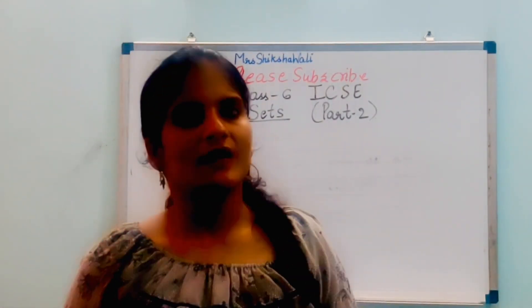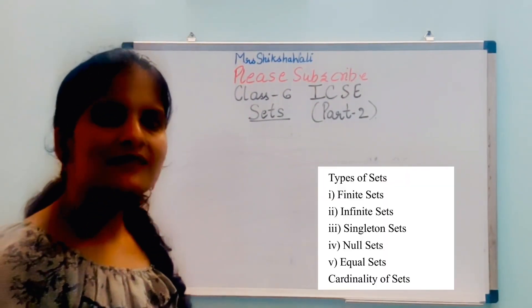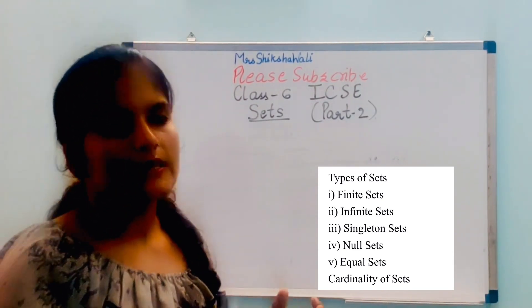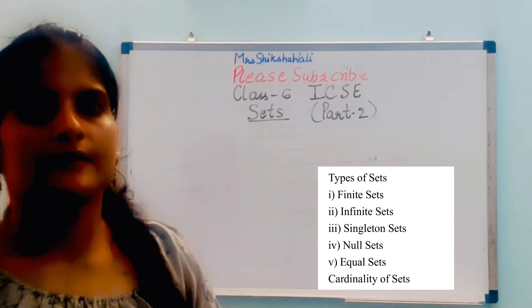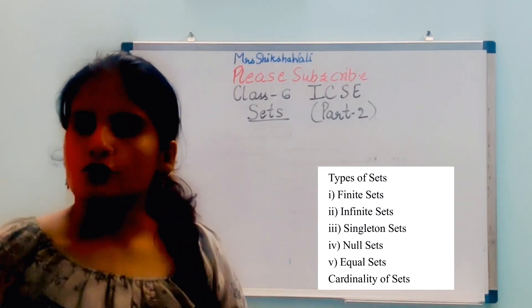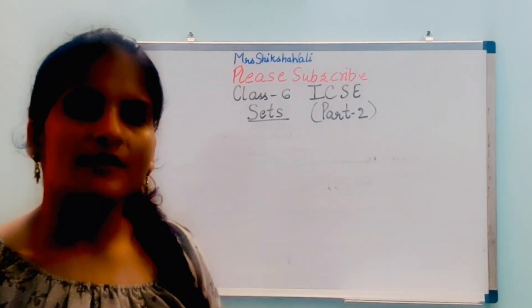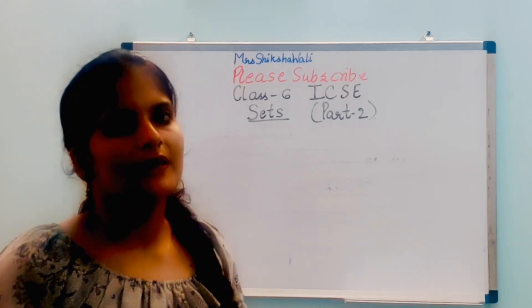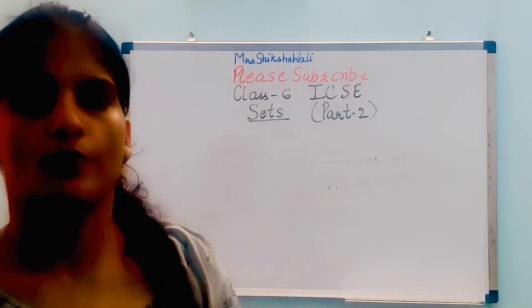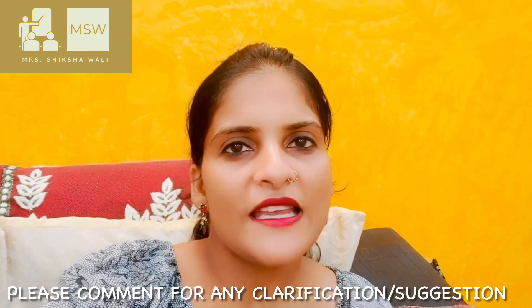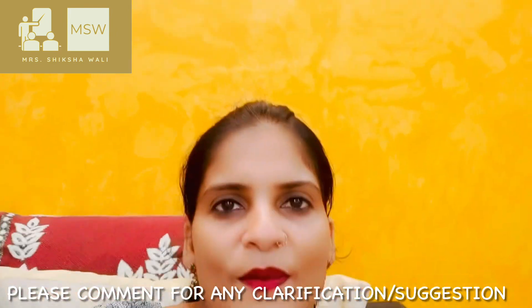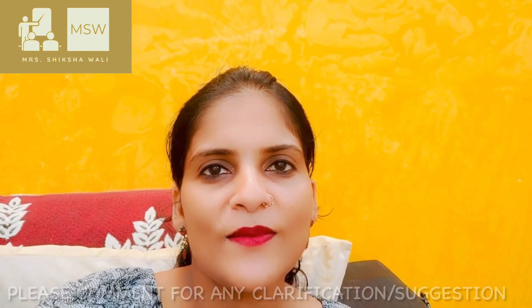In Sets Part 2, I have told you the types of sets — finite, infinite, null, equal, and singleton sets — and also cardinality. I hope this is clear. Attempt your exercises, and if you have any problem, comment — I will surely solve it. Thank you for watching. Please like, comment, and subscribe to my channel, and press the bell icon for notifications. Bye-bye.